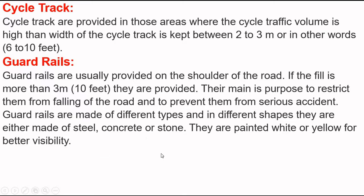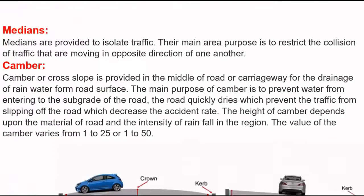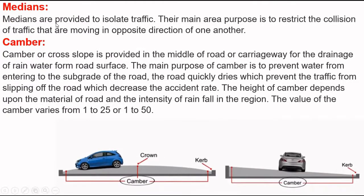The next element is medians. Medians are provided to isolate traffic. Their main purpose is to restrict collisions between traffic moving in opposite directions. The next element is chamber. Chamber, or cross slope, is provided in the middle of the road and carriageway for the drainage of rainwater from the road surface.